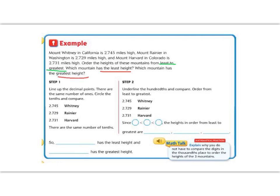So the first thing that we want to do is to line up all these numbers outside of our word problem and look at each one of them. So we see Whitney, Rainier, and Harvard all lined up right here. So it says, line up the decimals. They are the same number in the ones place. Circle the tenths and compare. So in the ones place, we have 2, 2, and 2, all the same. So now let's go to the tenths place. We have 7, 7, and 7.